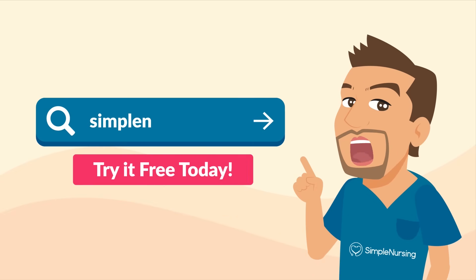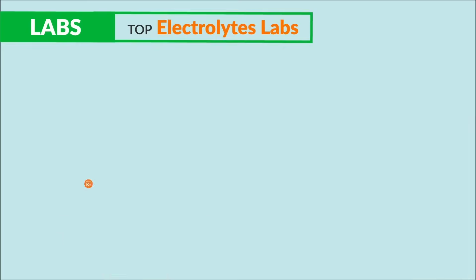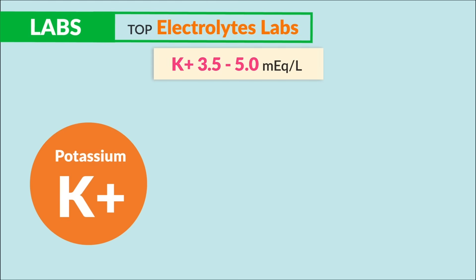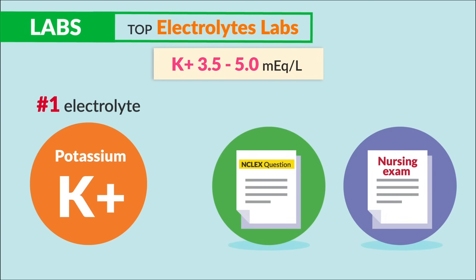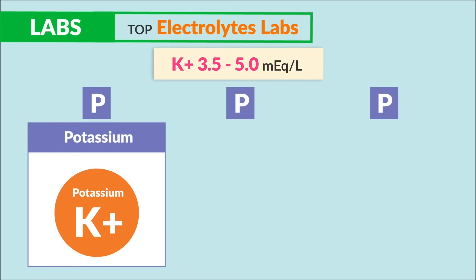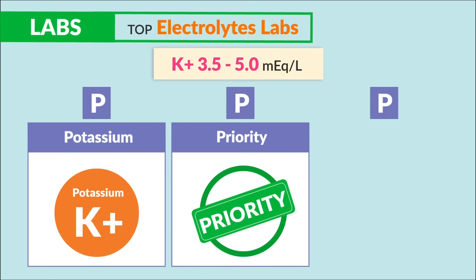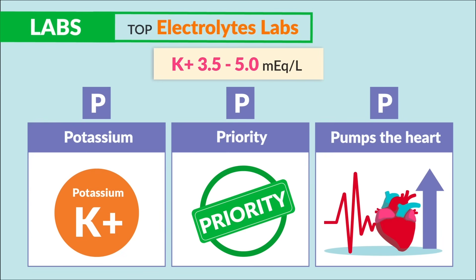For potassium, the normal range is 3.5 to 5.0. This is the number one electrolyte to know for the NCLEX and nursing exams. Think of the three P's of potassium: potassium is priority since it pumps the muscles.